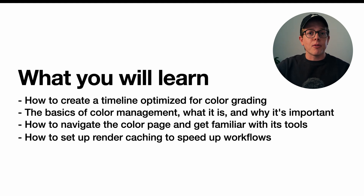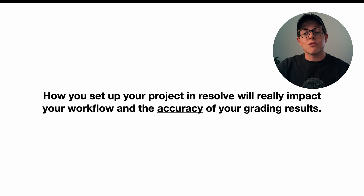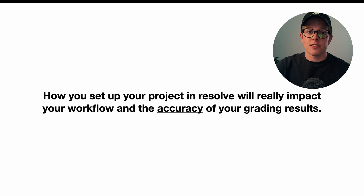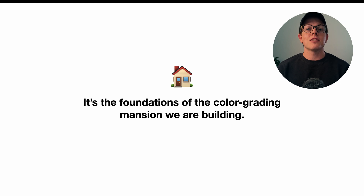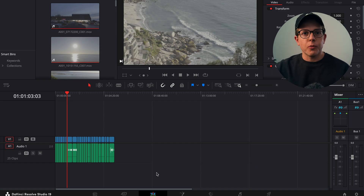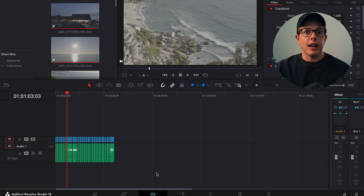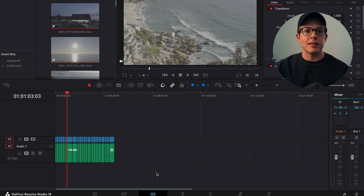All of these things are really important because how you set up your project in Resolve will really impact your workflow and the accuracy of your grading results. It's pretty much the foundations of the color grading mansion that we are building. So let's get into DaVinci Resolve. To begin we are going to start by setting up our project with our project settings, remembering that we are trying to optimize this for color grading specifically.